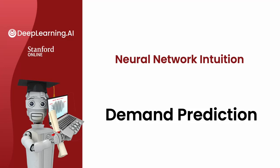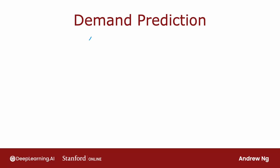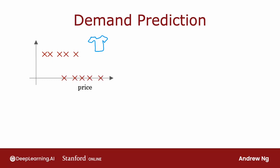To illustrate how neural networks work, let's start with an example. We'll use an example from demand prediction in which you look at a product and try to predict whether it will be a top seller or not. In this example, you're selling t-shirts and you'd like to know if a particular t-shirt will be a top seller, yes or no. You've collected data of different t-shirts sold at different prices, as well as which ones became a top seller. This type of application is used by retailers today to plan better inventory levels as well as marketing campaigns.